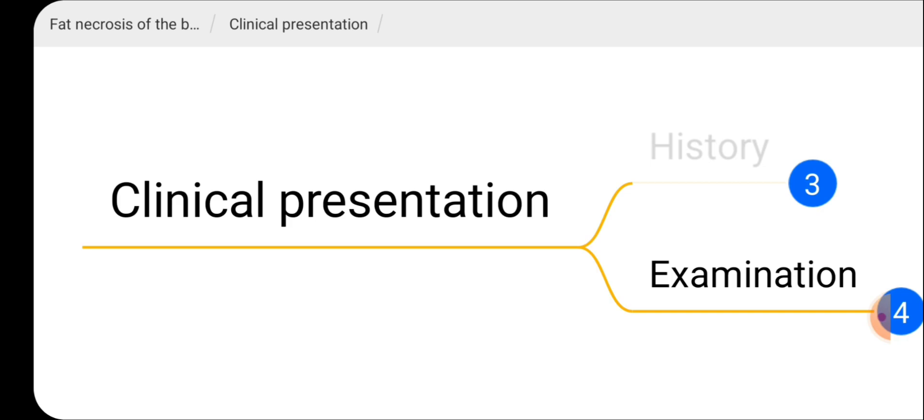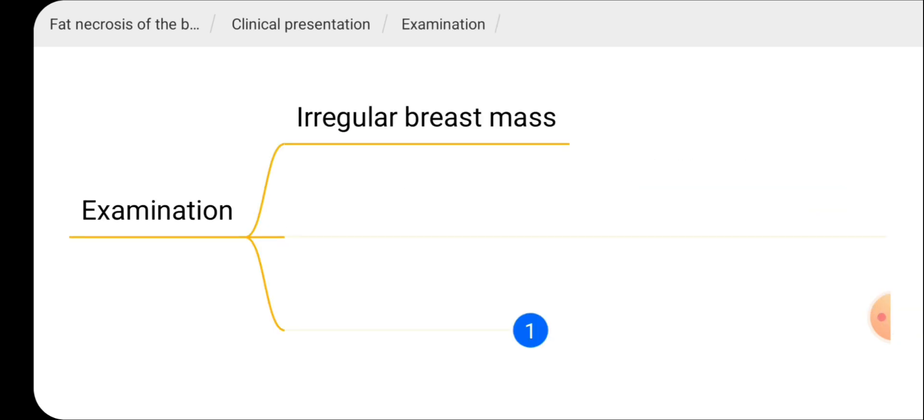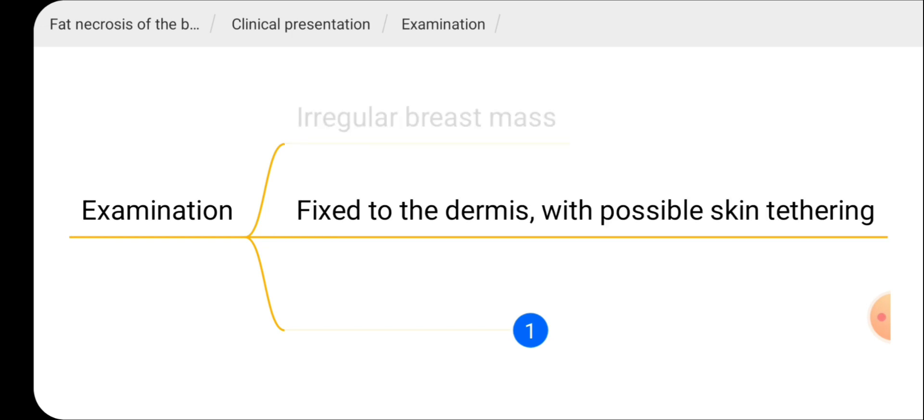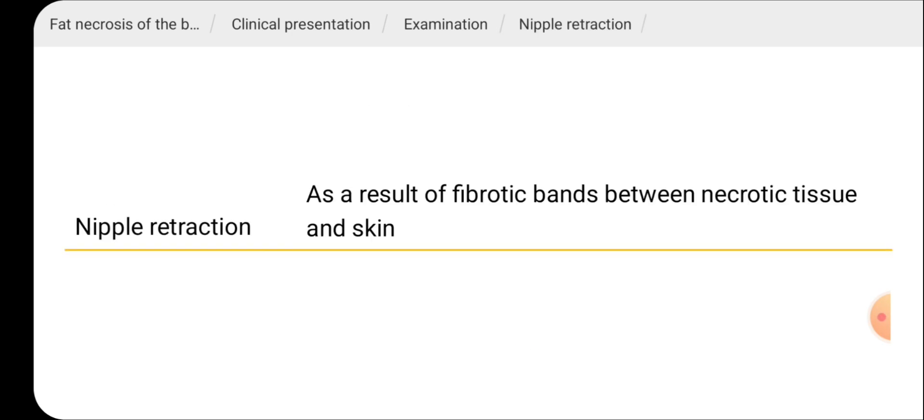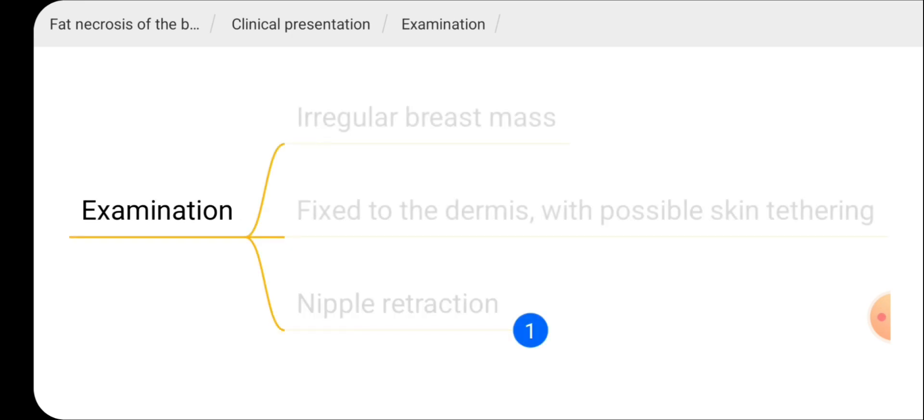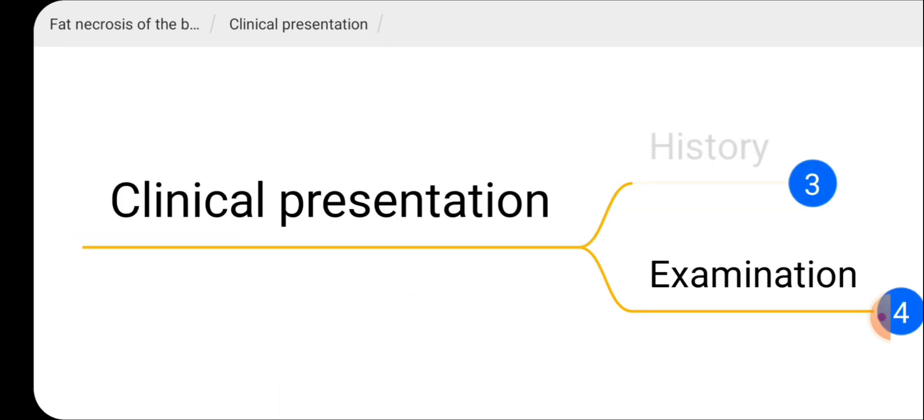On examination, you may feel an irregular breast mass fixed to the dermis with possible skin tethering. Nipple retraction can be there - the reason for nipple retraction is as a result of fibrotic bands between necrotic tissue and skin. So those are the clinical features of fat necrosis of the breast.